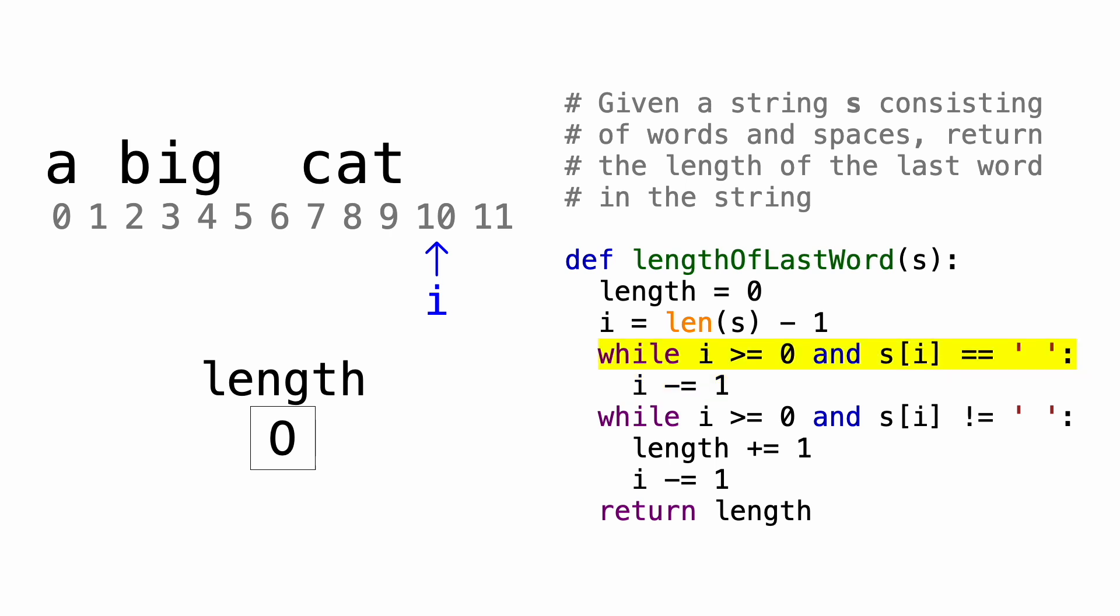Now when we check this condition, we see that the character at index 9 is not a space. So that makes this loop condition false, so we'll break out of the loop. Now that we know that we've hit the last word of the string, it's time to start counting its length.